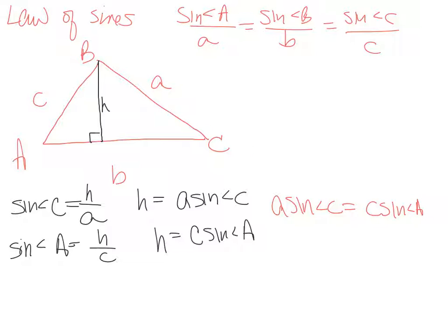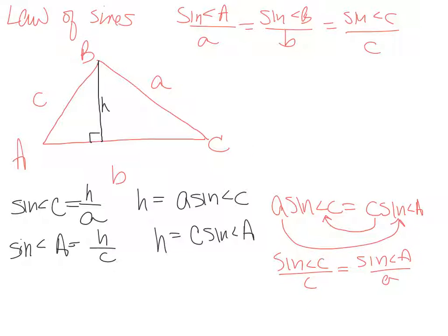Since H equals a sine angle C and H equals C sine angle A, we can set those equal to each other. Then with some algebra — moving terms under the denominators — we get: sine of angle C over c equals sine of angle A over a. Looks like we have the building blocks of our Law of Sines!